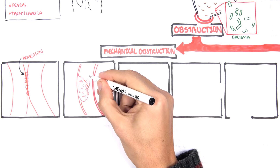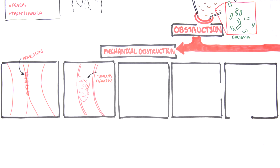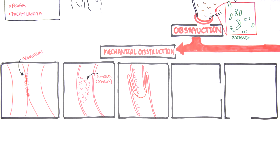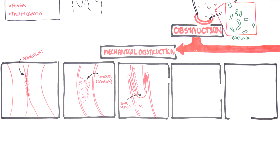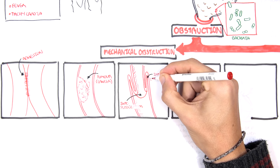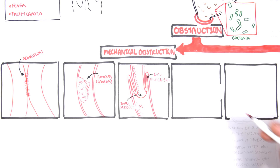Another common type of obstruction is where we have a tumor — a cancer growth — within the bowel itself, which can lead to an obstruction. Another type of mechanical obstruction is known as intussusception, which is when part of the bowel invaginates itself. There is some terminology: the part of the bowel that goes into the other part is known as the intususceptum, and the part of the bowel that is on the outside surrounding it is known as the intususcipient.